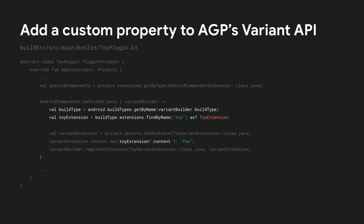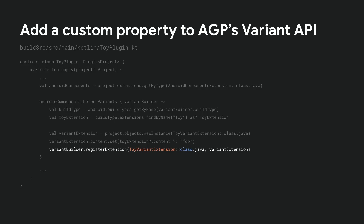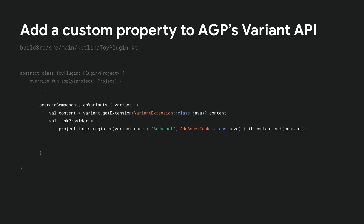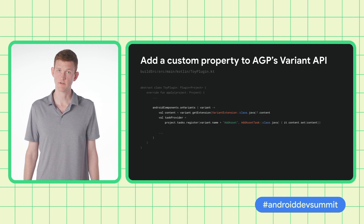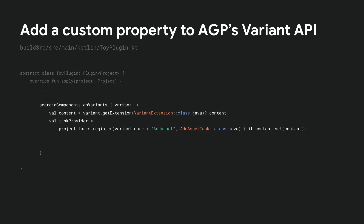We look up the value from the custom Toy DSL safely in the Before Variants block because the DSL is guaranteed to be finalized and locked when the Before Variants callback is called. We initially set our custom Variant property with the DSL value, or a default value if it's unset — the same convention used internally in AGP. Finally, we add our custom Toy Variant Extension to the Variant object via the RegisterExtension method. After all that work in the Before Variants block, we don't have much to do in the On Variants block to set our task's input with our custom Variant property. This illustrates why adding a custom Variant property is a good idea if you have multiple Gradle plugins that need to interact in a variant-specific way.